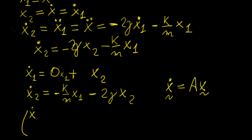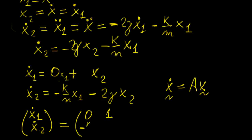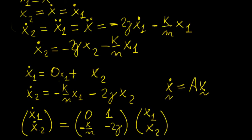So we have x dot 1 and x dot 2 equal to the matrix A times the vector x1, x2. The matrix A is going to be 0, 1 in the top row, and then at the bottom we're going to have minus k over m and minus 2 gamma. This is now our system, and we can solve it using the same methods illustrated in the previous videos.